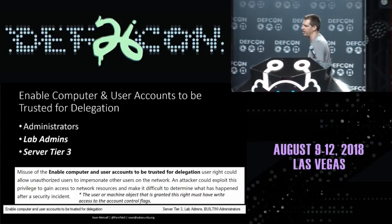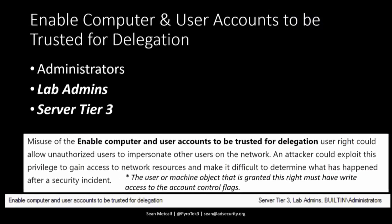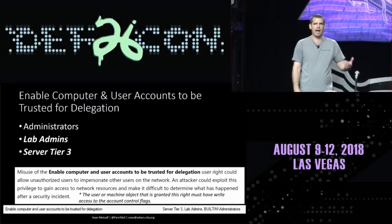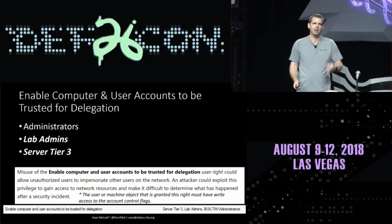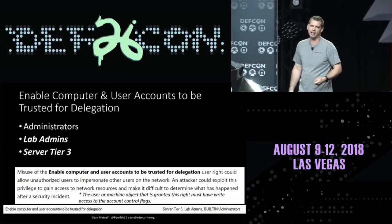Trusted for delegation is also really interesting. Will Harmjoy did a great blog article about unconstrained Kerberos delegation — that's impersonation. When you configure a computer or account with the ability to delegate, they can impersonate users for Kerberos services on the network. The user rights assignment for domain controllers enables accounts to set up Kerberos delegation on accounts and computer accounts. If you enumerate Kerberos delegation and find more than 30 or 40 accounts configured, there's probably a big non-admin group that has this ability.